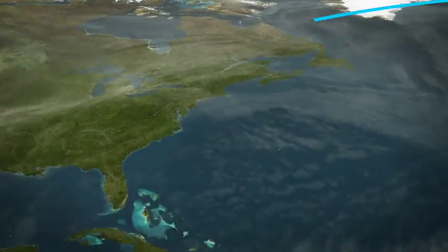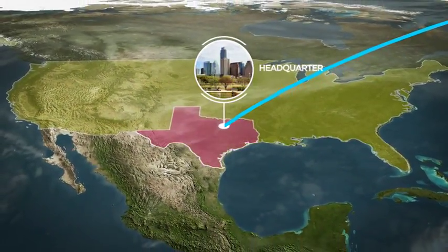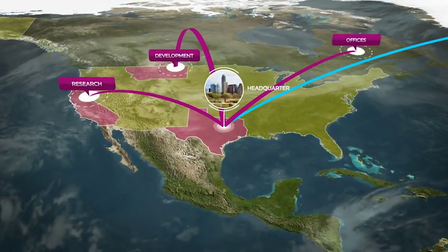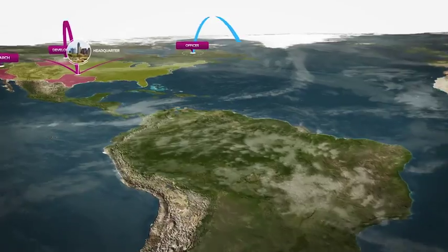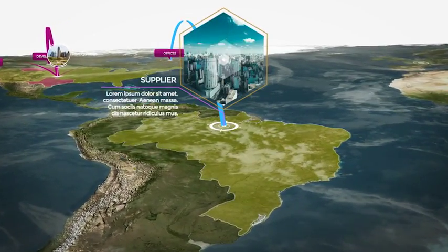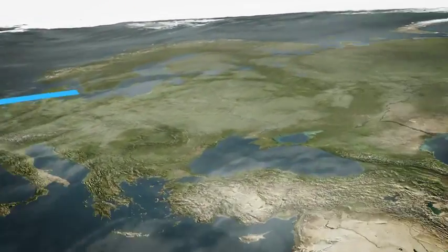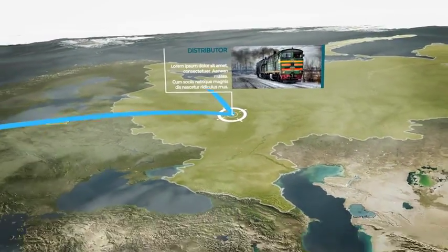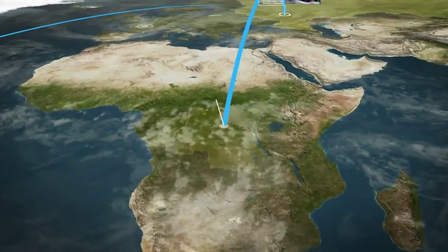How many times did you have to create an animation for you or for your customers in order to show and link different places in the world? Of course you can do it spending a lot of time and placing a ton of keyframes. But what would you think about a project that automatically creates a 3D map animation without the need to add, move or remove keyframes?